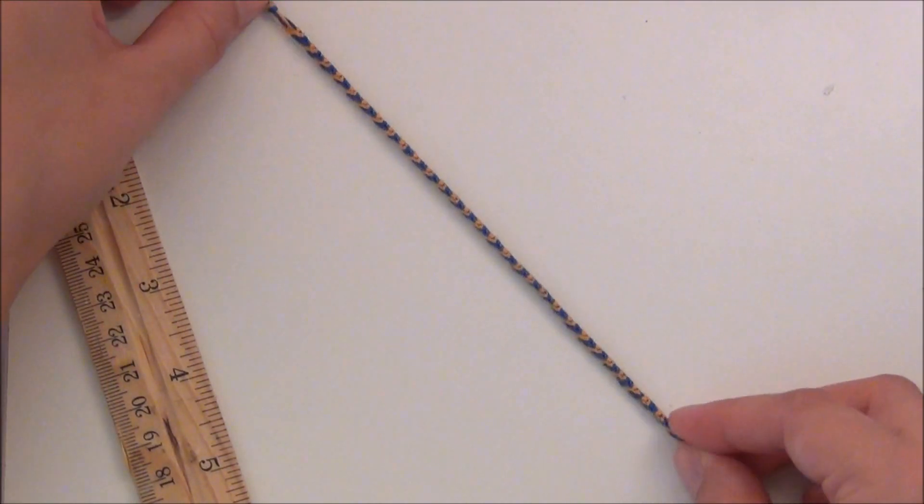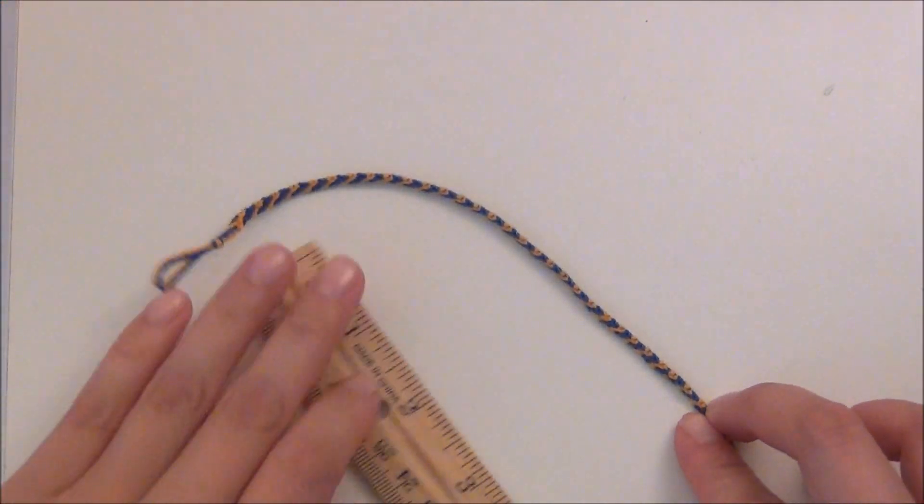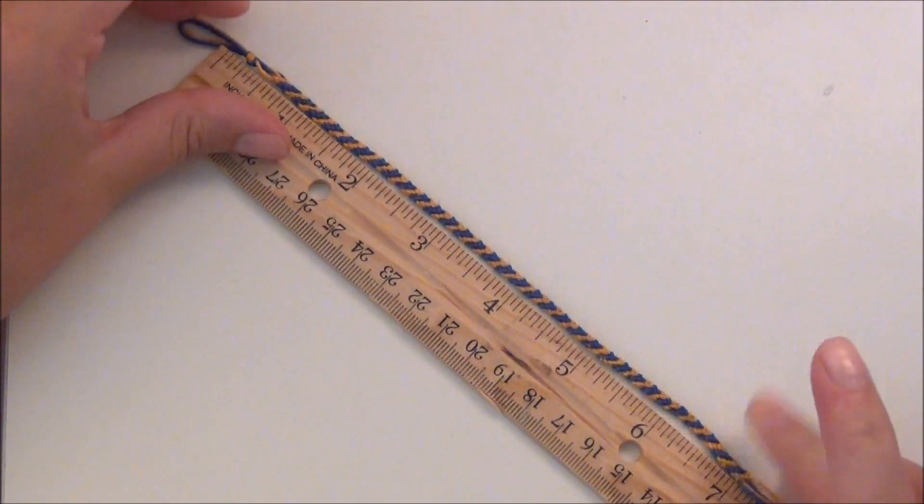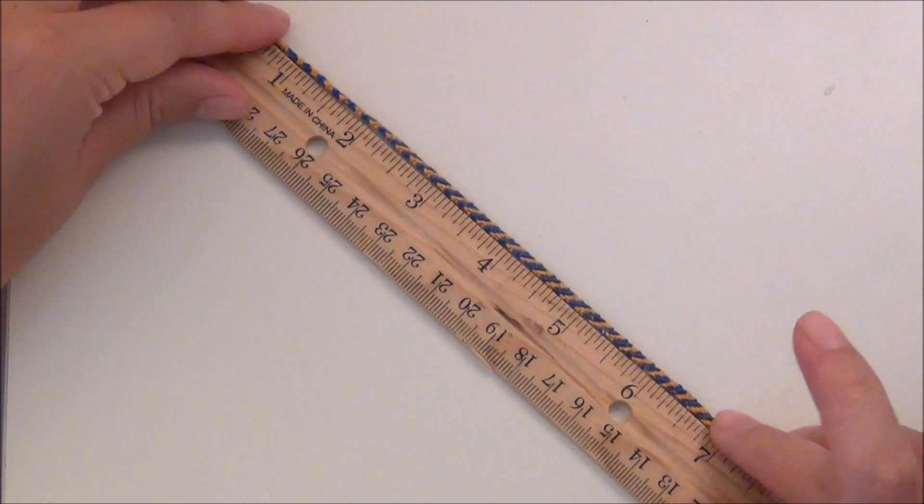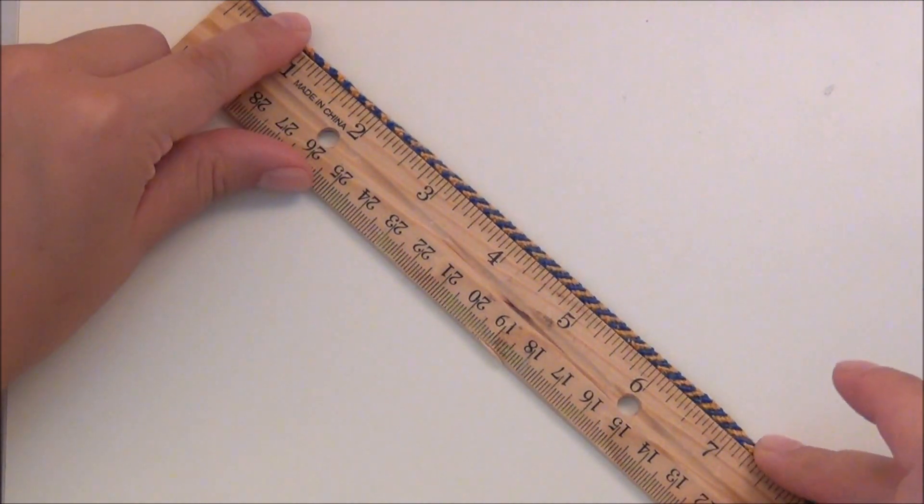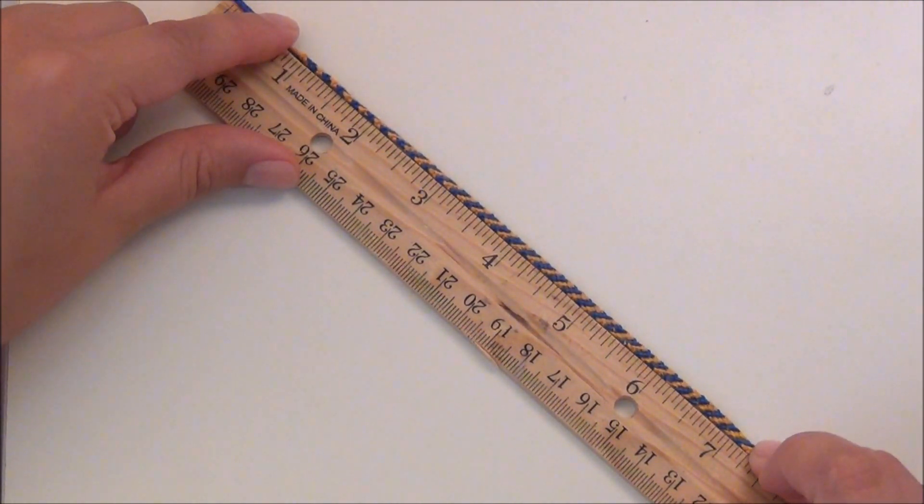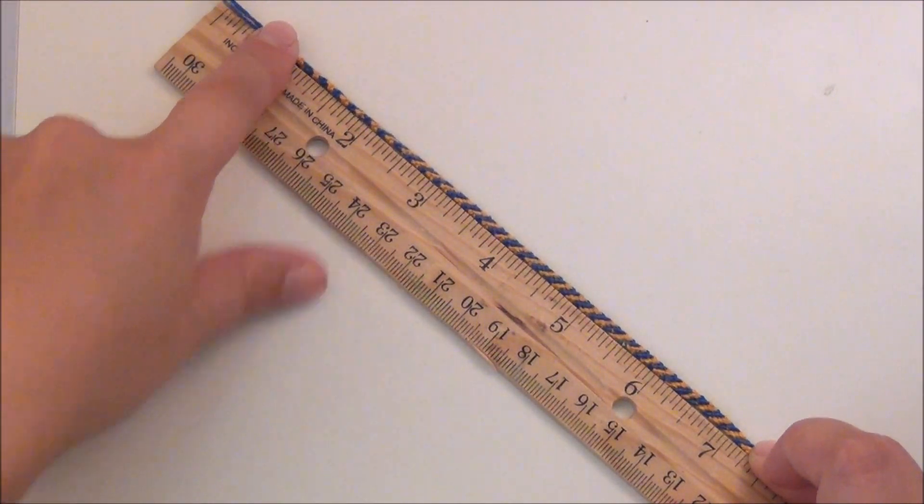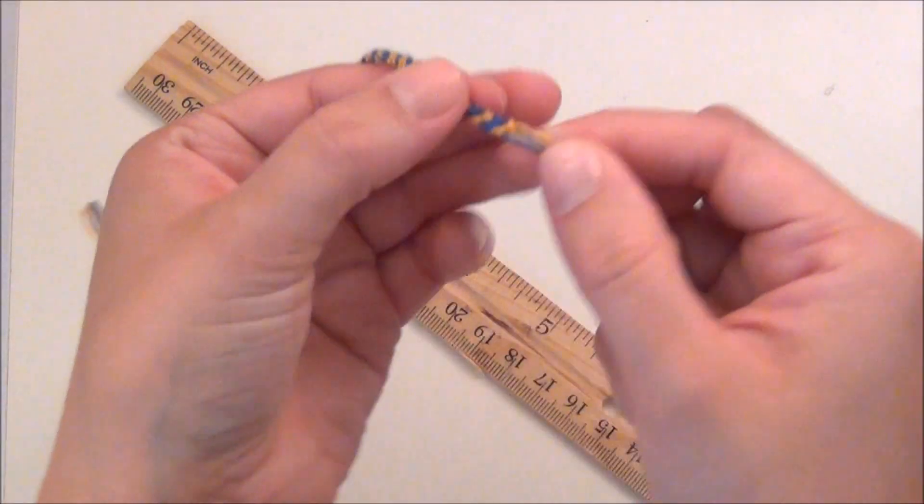Now that your bracelet is measuring, let's see, mine is measuring about seven and a half inches including the loop. That's a little bit long for my wrist actually, but that's a pretty average length of bracelet. Go ahead and tie a knot at the end of your work.